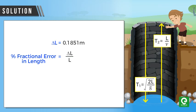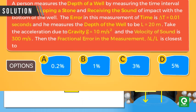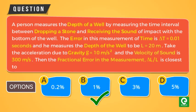Fractional error in the measurement is equal to ΔL upon L into 100. On putting the values of ΔL and L, fractional error in the measurement is equal to ΔL upon L into 100 equals 0.93 percent, which is close to 1 percent. Hence option B is correct.